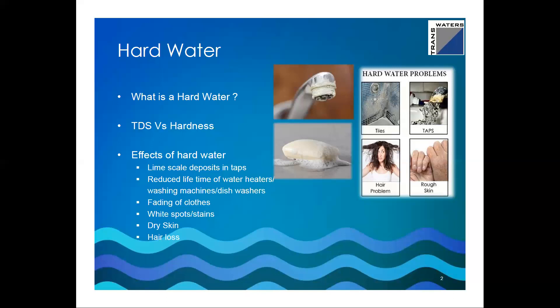White lime scale deposits on bathroom taps become very difficult to remove over time, and the same problem occurs with bathroom tiles. Hard water also causes fading of clothes — calcium and magnesium carbonate stick to the fabric surface, reducing brightness and shortening the life of clothing. White spots on utensils are very common: when you use hard water to wash vessels, once the water evaporates, calcium salts stick to the surface. For human beings, hard water causes dry skin — when bath water evaporates, salts remain on your skin creating rough patches — and hard water can also contribute to hair loss.